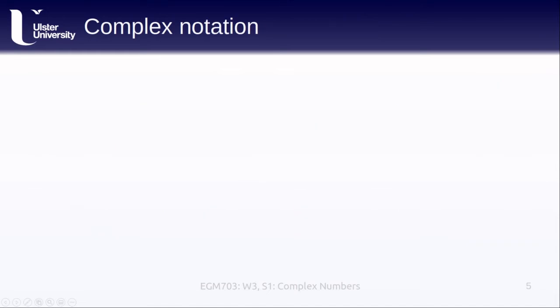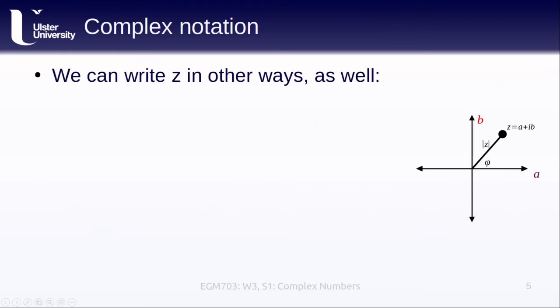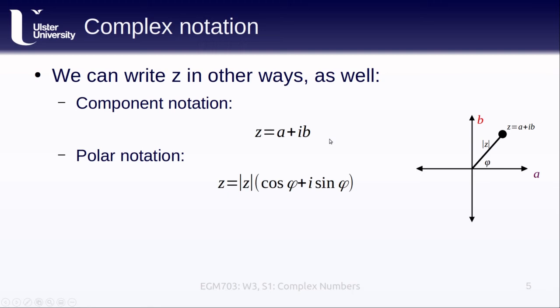In addition to thinking of z as a vector, we can also write z in other ways. We've seen the complex notation already, where z is equal to a + ib, but we can also write this in polar notation. Here we're just replacing a with the magnitude multiplied by the cosine of the angle, and replacing b with the magnitude multiplied by the sine of the angle, and then we rearrange so that we factor out the magnitude.